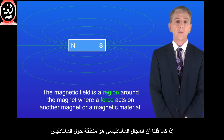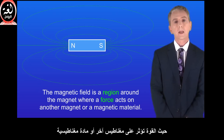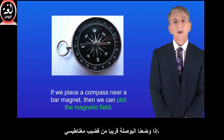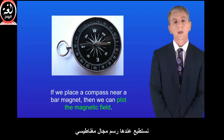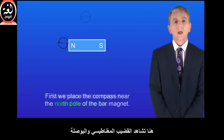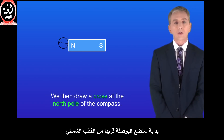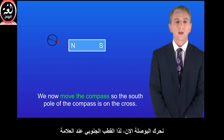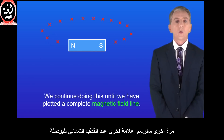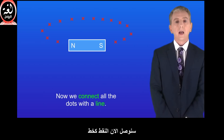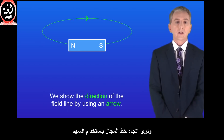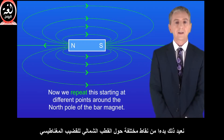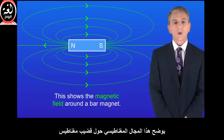The magnetic field is a region around the magnet where a force acts on another magnet or a magnetic material. The direction of a magnetic field can be found using a compass. A magnetic compass contains a small bar magnet. If we place a compass near a bar magnet, then we can plot the magnetic field. First we place the compass near the north pole of the bar magnet and draw a cross at the north pole of the compass. We then move the compass so the south pole of the compass is on the cross, and again draw another cross at the north pole of the compass. We continue doing this until we've plotted a complete magnetic field line, then connect all the dots with a line and show the direction of the field line using an arrow. The direction always runs from the north pole to the south pole. We repeat this starting at different points around the north pole of the bar magnet to show the full magnetic field around the bar magnet.